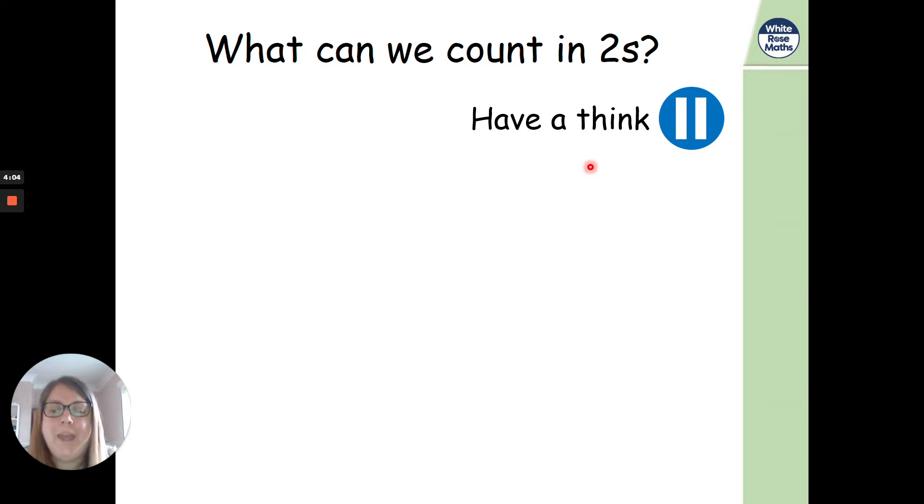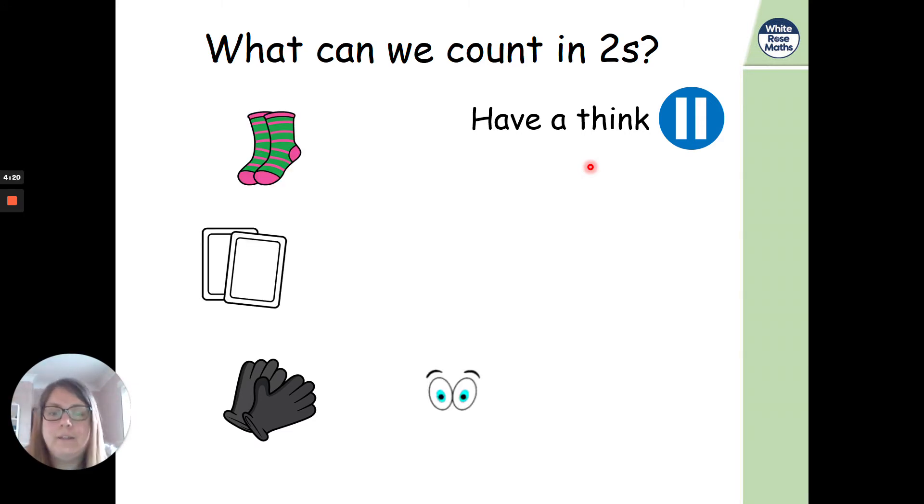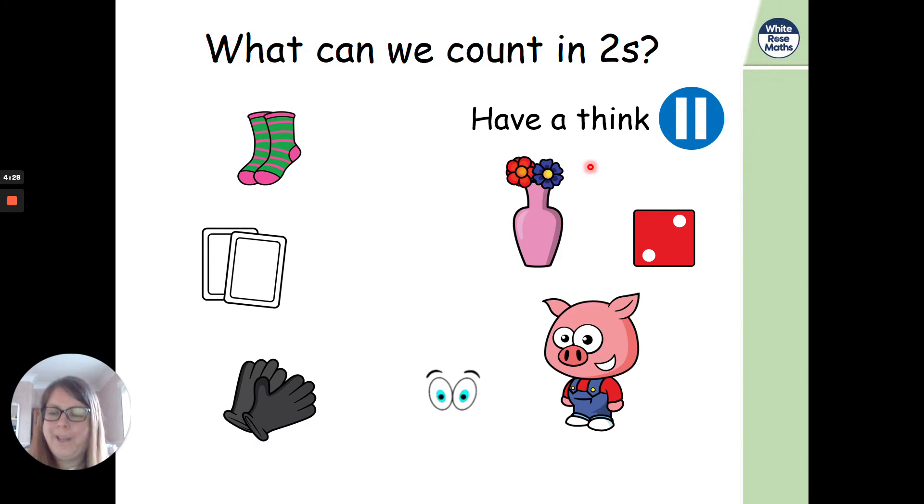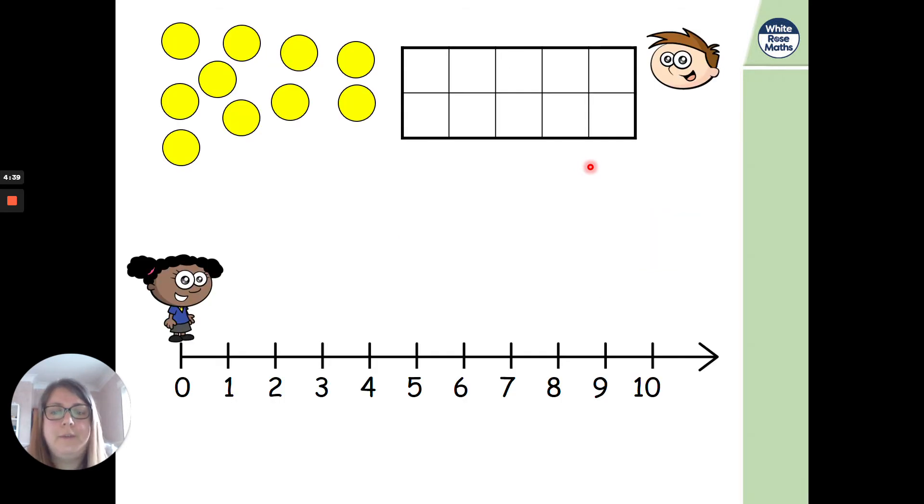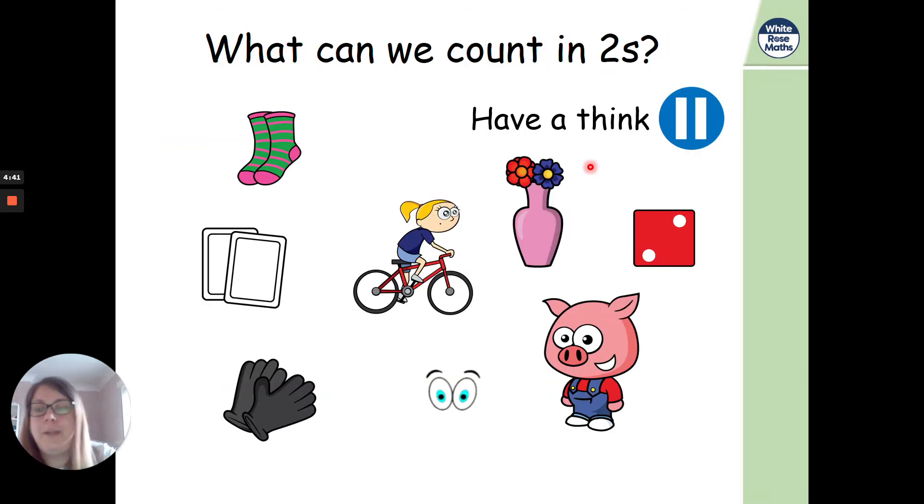Have a little think. What can we count in twos? Remember twos are like a pair of something. There's a little bit of a clue. So if we pause the video, have a think. What can you count in twos? We could count gloves. Because they're a pair, aren't they? We've got gloves, socks, eyes, two cards, dice if it shows the number two, two flowers, a pig. What do you think the pig is for? I wonder if it's his feet. I think it's his feet. The bike has got two wheels.